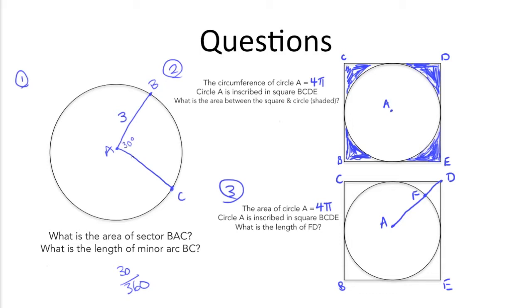We know that the sector BAC has a radius of 3, and we know that the formula for the area of a circle is pi r squared, so pi times 3 squared.